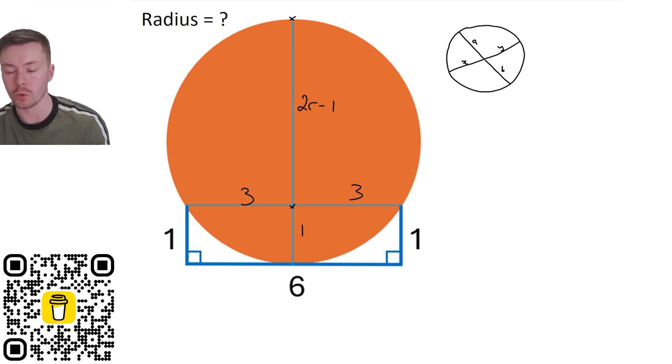So X goes from here to where they intersect and Y from the intersection to the circumference and A and B similar. This circle theorem is that A times by B is equal to X times by Y.